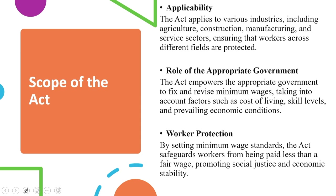On the basis of scope, the first and foremost aspect is applicability. The act applies to various industries including agriculture, construction, manufacturing, and even the service sector, ensuring that workers across all these different fields are protected. The act empowers the appropriate government with authority to fix and revise minimum wages, considering factors like the cost of living, skill levels, and prevailing economic conditions. Worker protection is also one of the key aspects — the act safeguards workers from being paid less than a fair wage, promoting social justice and economic stability.